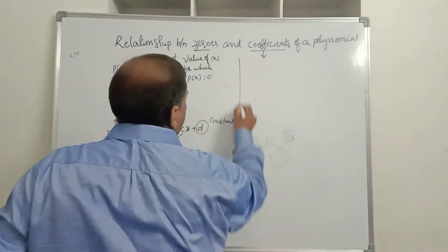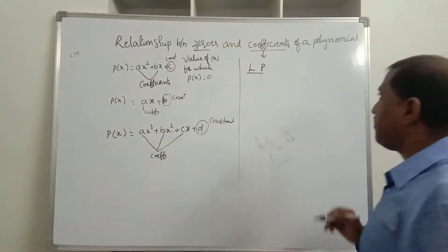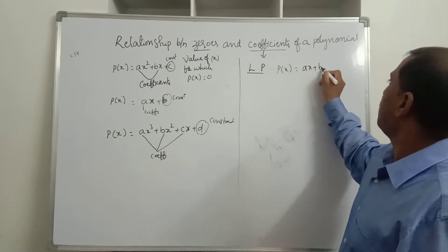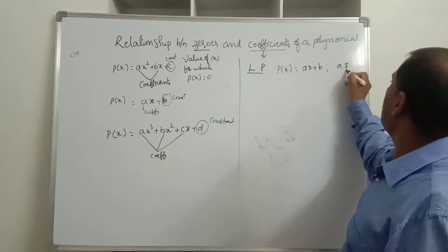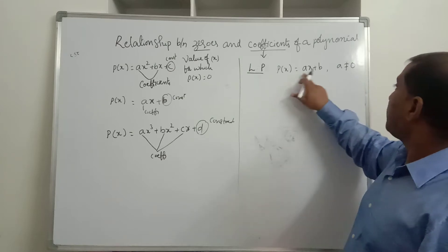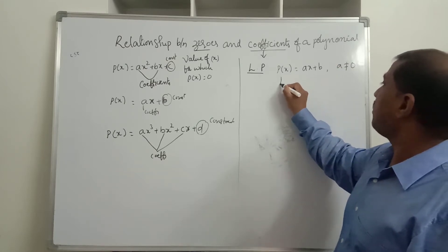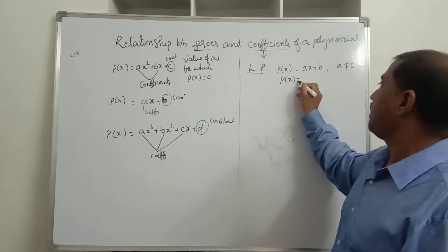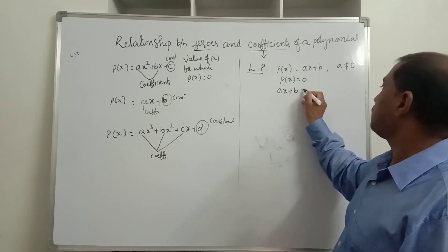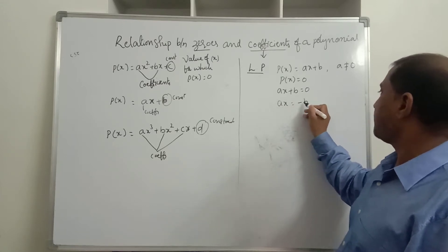What is the general form of a linear polynomial? It is p(x) = ax + b, where a ≠ 0. Now, to find the zero of this polynomial, we take p(x) = 0. So ax + b = 0. Transpose +b to the other side — it becomes −b on the RHS.